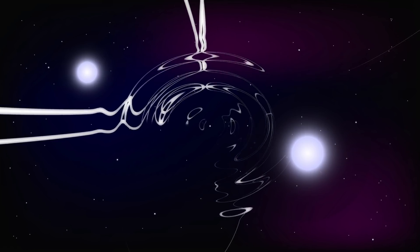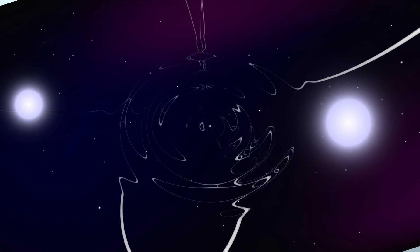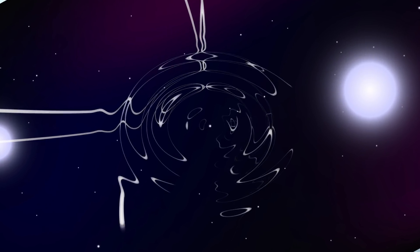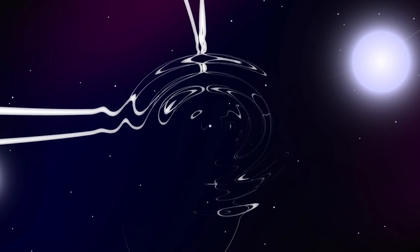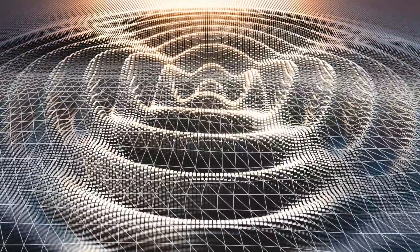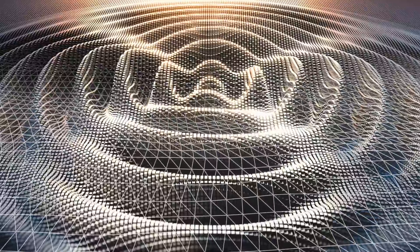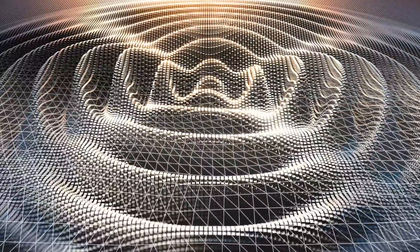These ripples in space and time from violent events will be passing through this room now because there have been very violent events out there in the universe. But they're very, very tiny shifts. You can measure it using a process called interference, and so you can measure very tiny changes in distances.